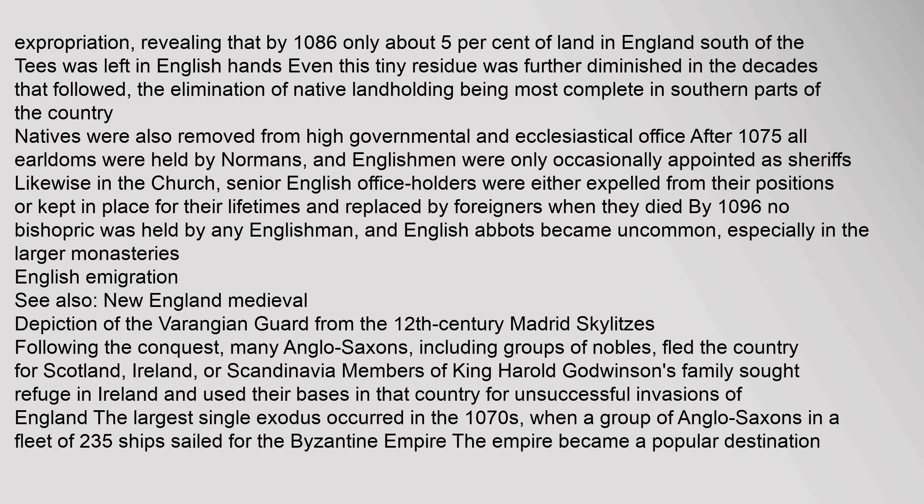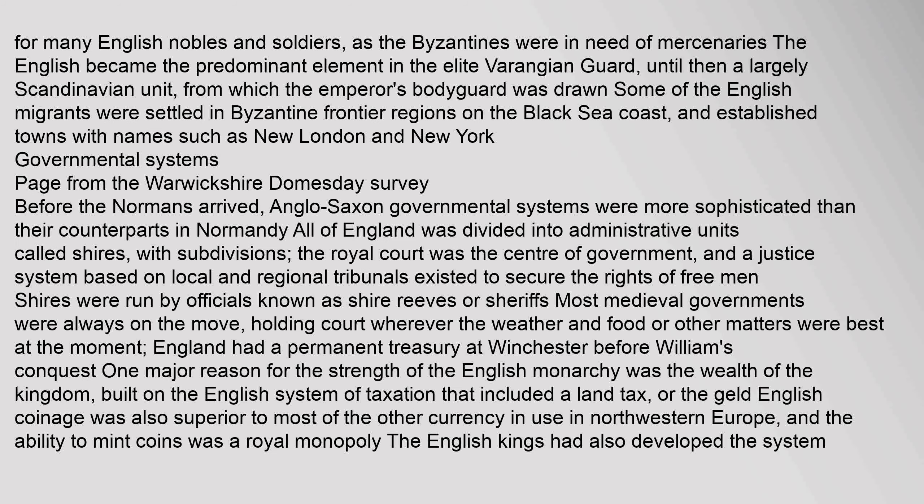Following the conquest, many Anglo-Saxons, including groups of nobles, fled the country for Scotland, Ireland, or Scandinavia. Members of King Harold Godwinson's family sought refuge in Ireland and used their bases in that country for unsuccessful invasions of England. The largest single exodus occurred in the 1070s, when a group of Anglo-Saxons in a fleet of 235 ships sailed for the Byzantine Empire. The empire became a popular destination for many English nobles and soldiers, as the Byzantines were in need of mercenaries. The English became the predominant element in the elite Varangian Guard, until then a largely Scandinavian unit, from which the emperor's bodyguard was drawn. Some of the English migrants were settled in Byzantine frontier regions on the Black Sea coast, and established towns with names such as New London and New York.